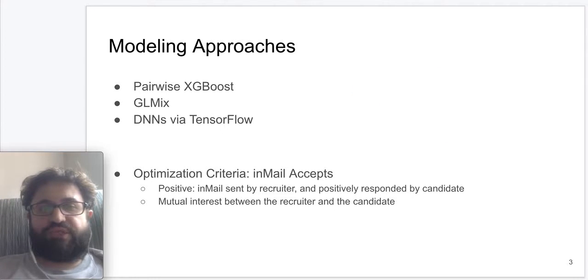Three main approaches that have been utilized for ranking candidates within the recruiter product are as follows. The first one is a pairwise gradient boosted decision trees. Next, we have generalized linear mixed models that understand explicit personalization along the recruiter dimension. And finally, more recently, we have deep neural nets.